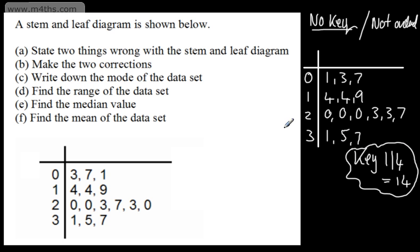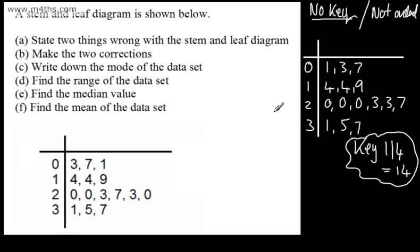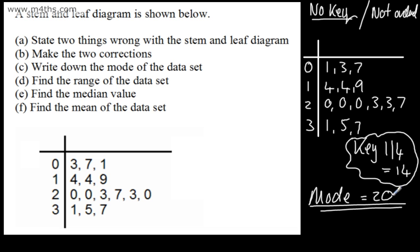For part C we need to find the mode. We can see we've got three zeros in the row with stem 2. The mode is 20 — don't be tempted to write 0, it's 20. We've got two 4s giving 14, two 3s giving 23, but three 20s, so the mode is 20.